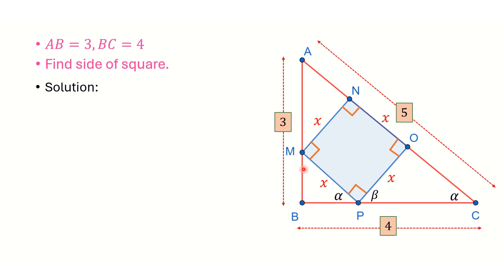Similarly, for the next corner, since the square angle is 90, the remaining angle is beta. And for the following corner, since the square angle is 90, the remaining angle is alpha. For the last corner, by the same idea, the angle works out to be beta. So now I know all the angles.